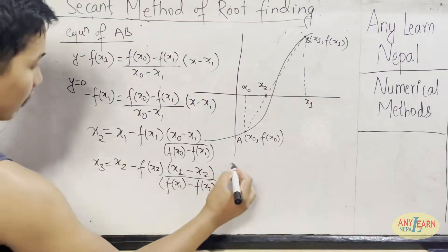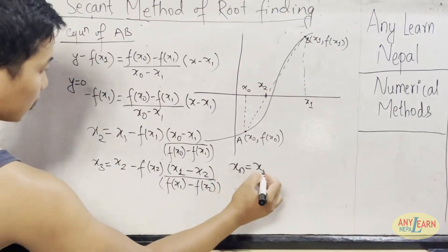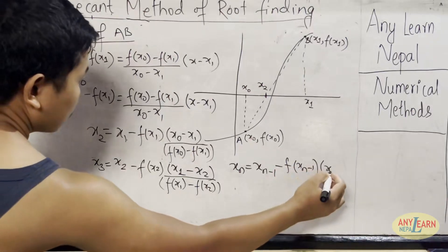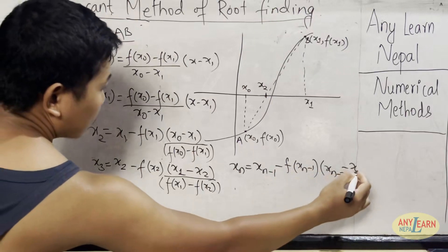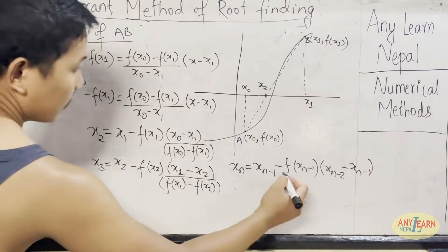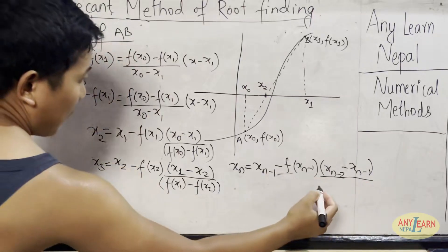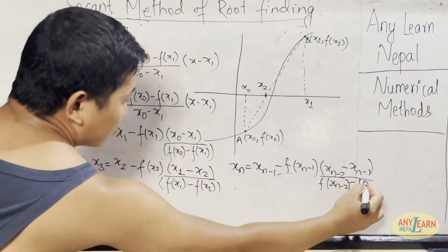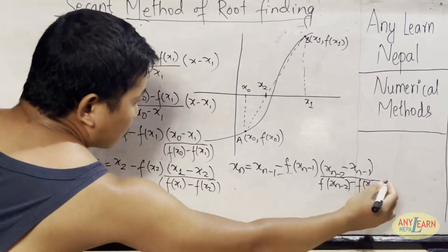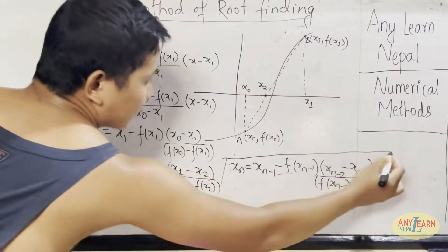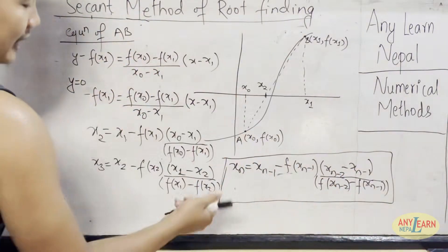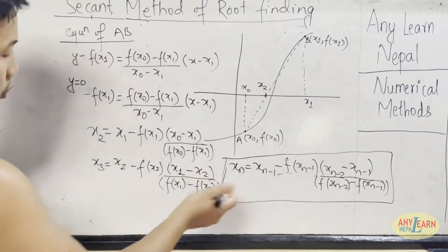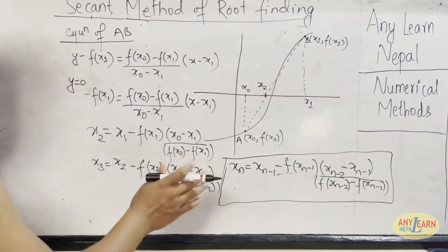And similarly, for xn, we can write xn equals x(n-1) minus f(x(n-1)) times (x(n-2) minus x(n-1)) divided by (f(x(n-2)) minus f(x(n-1))). This is our final expression to calculate the root using the secant method. By the succession of the roots of the secants, we get closer to the root. This way we can calculate the root using the secant method.